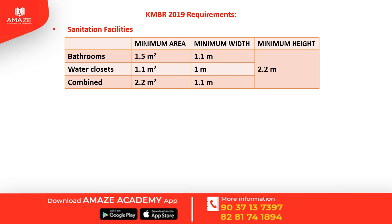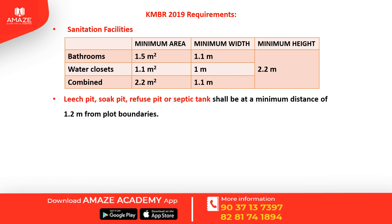The conditions for a leech pit, sock pit, refuse pit, or septic tank require a minimum distance of 1.2 meters from the plot boundaries.